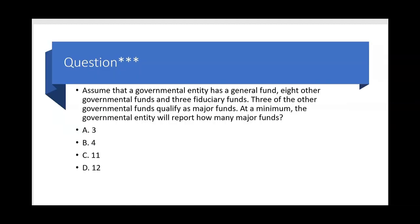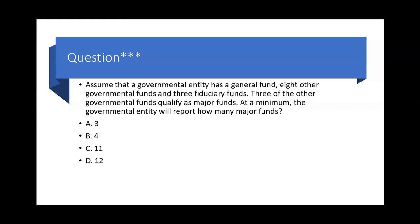Let's try this question: Assume a governmental entity has a general fund, eight other governmental funds, and three fiduciary funds. Three of the other governmental funds qualify as major funds. At a minimum, how many major funds will the governmental entity report? If you think you know, leave the answer in the comments section below.